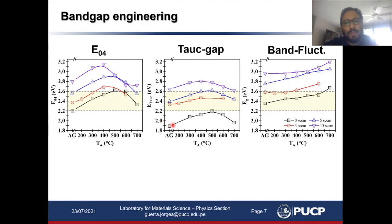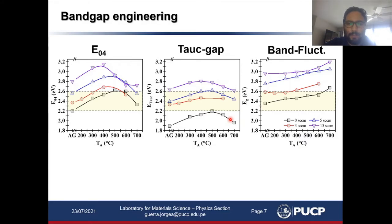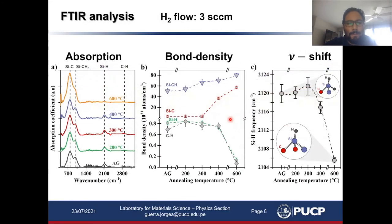In particular, the variation of the optical bandgap with the annealing treatment in the case of hydrogenated silicon carbide has been attributed to the out-diffusion of hydrogen. However, we see the same behavior — an increase and a decrease of the bandgap — in the case of a sample grown without any hydrogen dilution. We believe that this variation is actually related to a change in the structure, and for this we have also performed FTIR analysis on these samples.